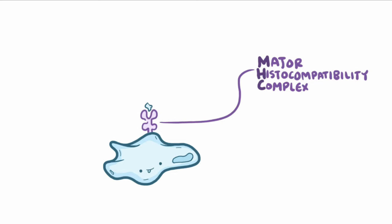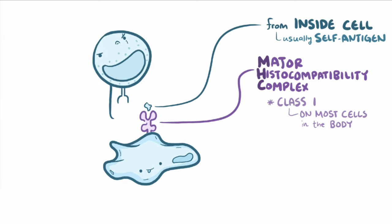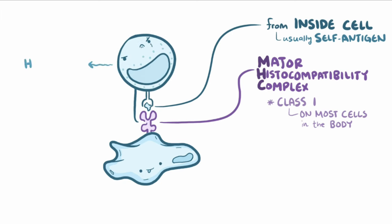There are two kinds of MHC molecules: class 1 and class 2. Class 1 molecules are found on most cells in the body, and they present molecules from within the cell for the immune system to continually sample. Normally that molecule is just a sample from inside the cell, also known as a self-antigen. When immune cells pass by, they recognize this self-antigen as harmless, so there's no response.